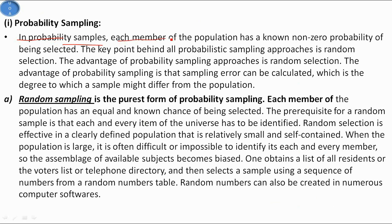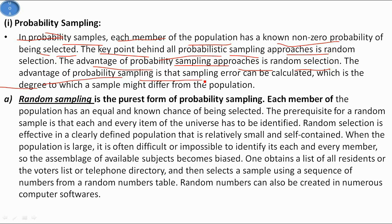In probability samples, each member of the population has a known, non-zero probability of being selected. The key point behind all probabilistic sampling approaches is random selection. The advantage of probability sampling is that sampling error can be calculated — that is, the degree to which a sample might differ from the population.